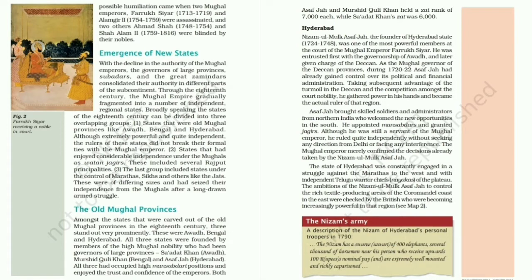The old Mughal provinces included Awadh, Hyderabad and Bengal. Hyderabad state was founded by Nizam ul-Mulk Asafjah. The state was constantly engaged in a struggle against the Marathas. Awadh was founded by Saadat Khan, and the rich alluvial plains allowed development of the region. Bengal was founded by Murshid Quli Khan, who commanded revenue administration of the state. Under Ali Vardi Khan, Bengal became prosperous. Both Asafjah and Murshid Quli Khan held a Jat rank of 7,000 each, while Saadat Khan's Jat rank was 6,000.